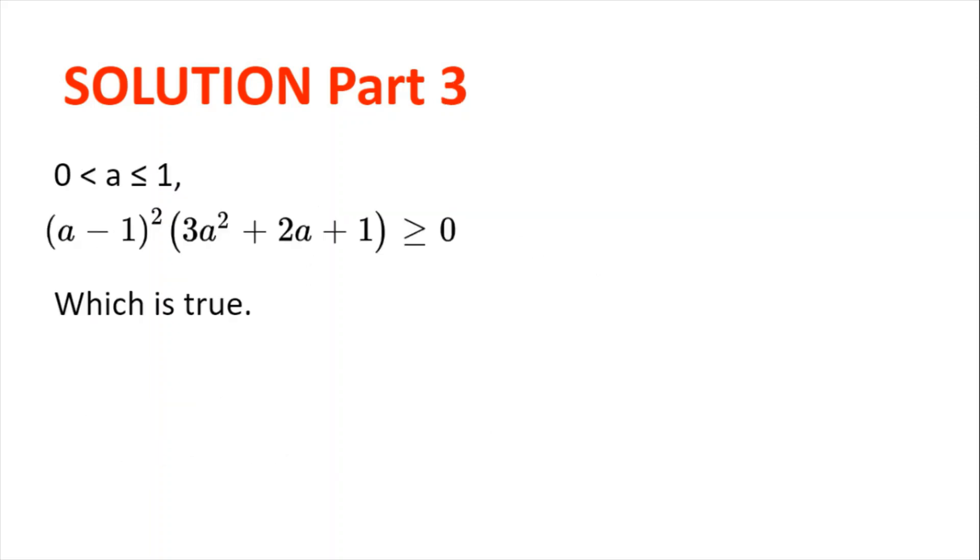So, (a - 1)² is at least 0 because it's a square, and 3a² is at least 0. 2a is at least 0 because a > 0, and 1 is also greater than 0.